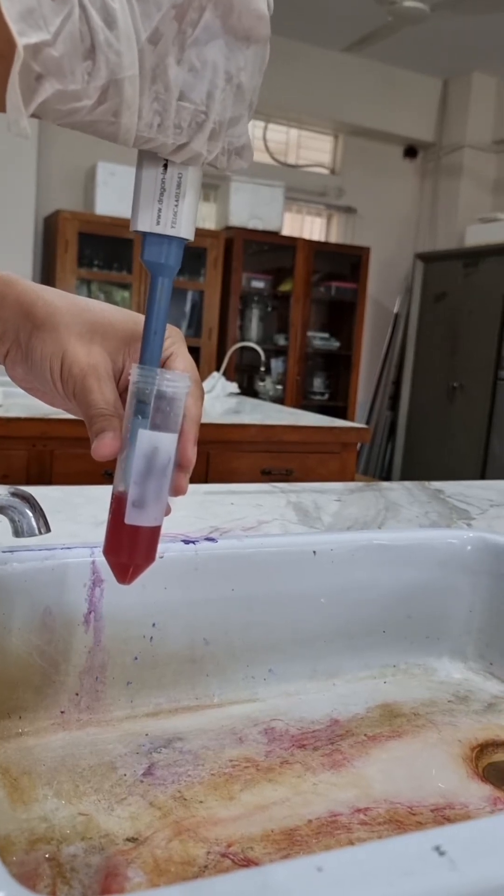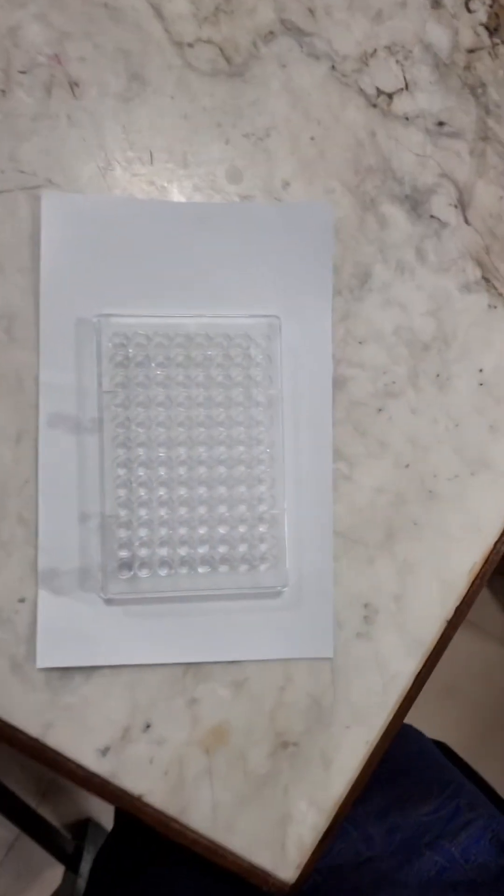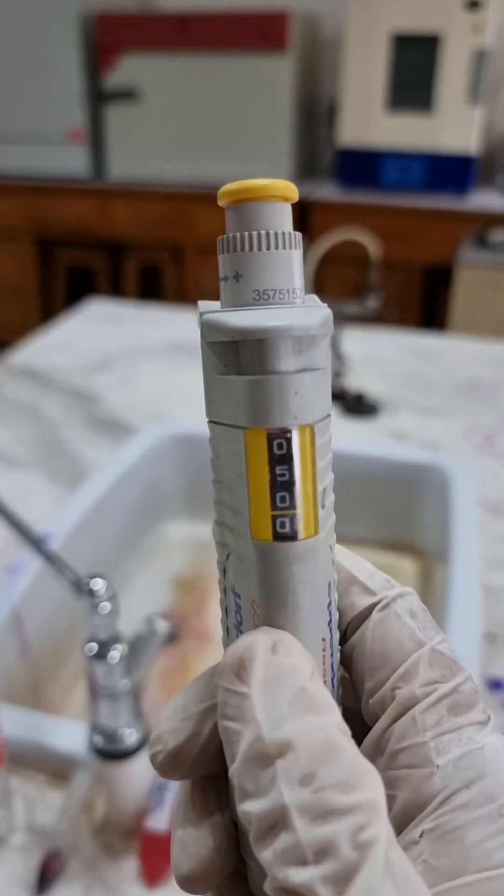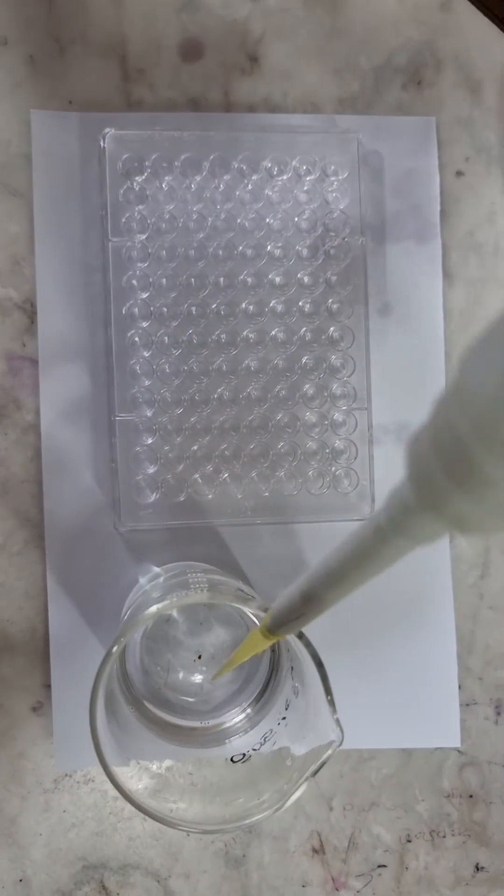This is our one percent RBC and now we are ready to do the HA test. First, we take a 96-well microtiter plate, then we are taking 50 microliters of PBS in 12 of those wells.